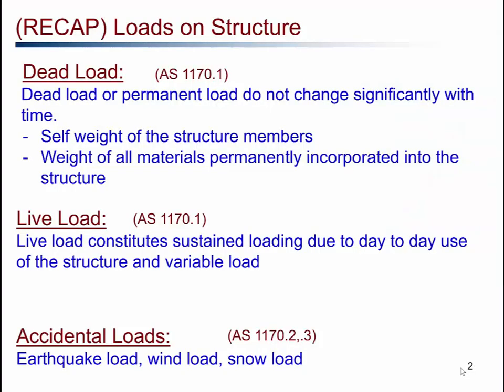We know that the structure can be subjected to different kinds of loads — for example, dead load, live load, or other accidental loads such as earthquake loads, wind load, or snow load. Dead loads are basically the permanent loads that act on a structure and do not change significantly with time. The self-weight of the structure, for example, can be considered as a dead load. If it is a reinforced concrete beam, the weight of the beam itself is the dead load. For a steel column, the weight of the column needs to be taken into account as well. It also includes the weight of materials permanently incorporated into the structure — for example, the weight of partition walls. In Australian Standard, AS 1170.1 gives more detailed information about the dead loads to consider for different materials.